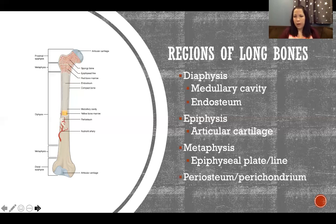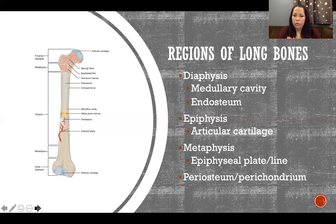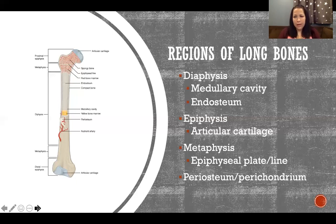The periosteum is the outer sheath covering the bone wherever there is not articular cartilage. Perichondrium — 'chondro' meaning cartilage — is the outer covering of cartilage. Articular cartilage has a perichondrium covering it. In kids whose bones are still growing, anywhere without articular cartilage is covered in perichondrium rather than periosteum. When the bone is done growing, the perichondrium converts into periosteum.